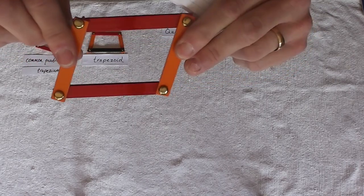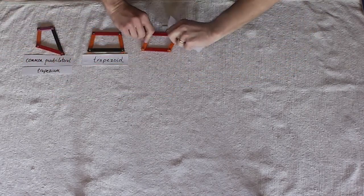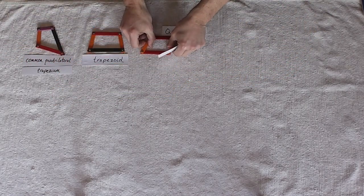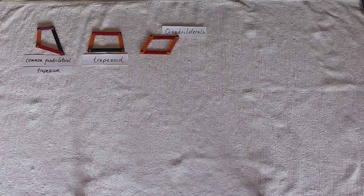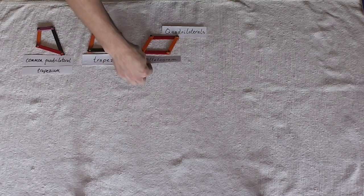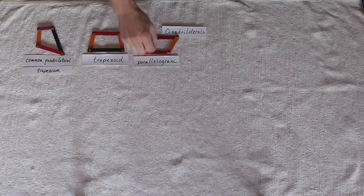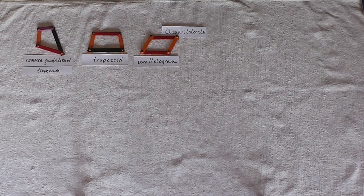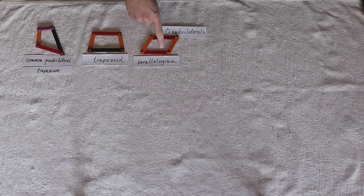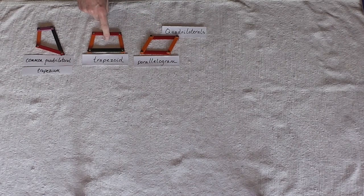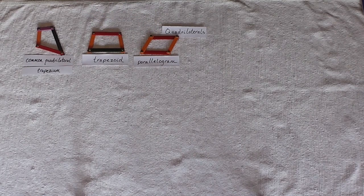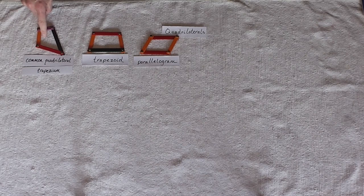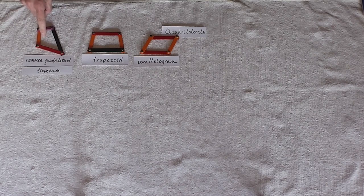Our next shape. Two sets of parallel sides. We're going to call that a parallelogram. So we've laid out three shapes so far: parallelogram, trapezoid, and common quadrilateral or trapezium.